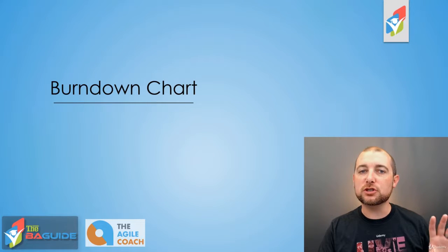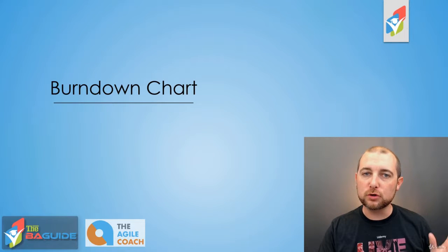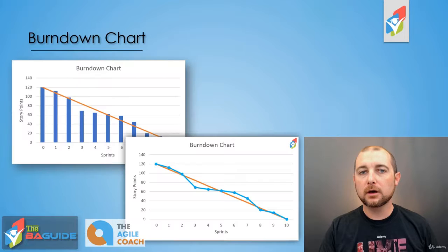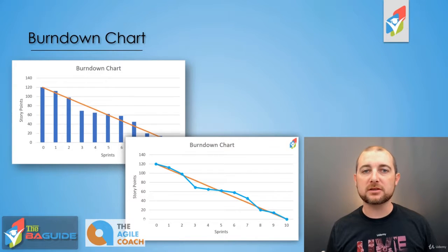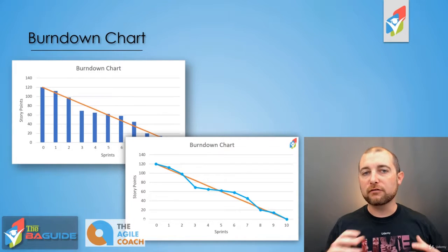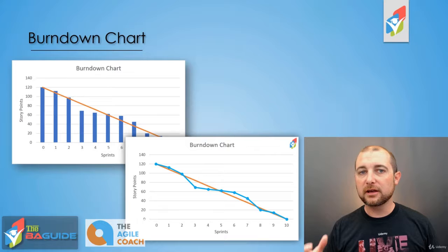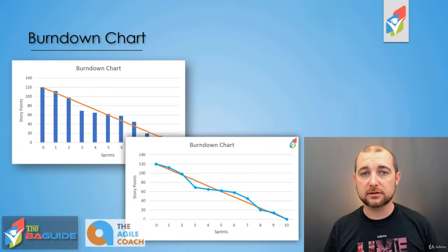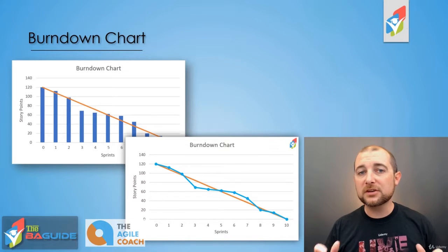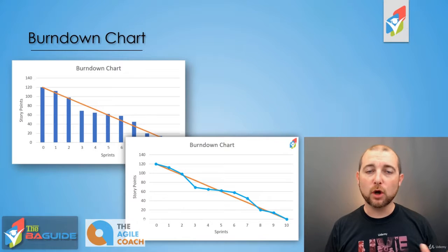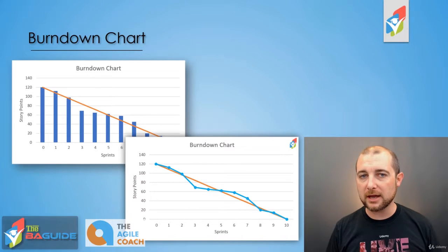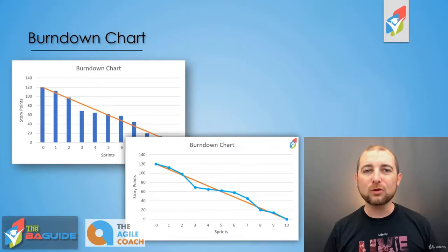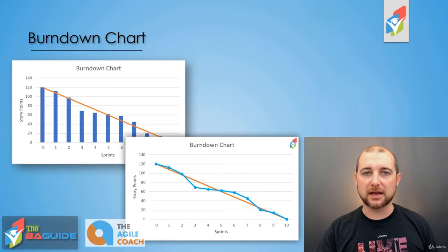In this lecture, we're going to teach you about a tool utilized in Scrum called a burndown chart. A burndown chart is a visual representation of work being completed throughout the various sprints of the project. The design of this particular chart will be different depending on the tool you utilize to create it, but ultimately they show the same sort of data.